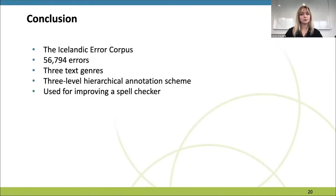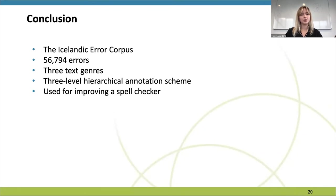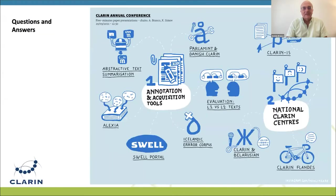To conclude, we created the Icelandic error corpus, which is published open source on Clarin. It consists of roughly 57,000 errors annotated according to a three-level hierarchical annotation scheme. The text sources are three, and the motivation for creating this corpus was to improve the open source Icelandic spell and grammar checker, Greinar Korrekt. Thank you. We now enter a 10-minute period for questions and answers for these three papers.